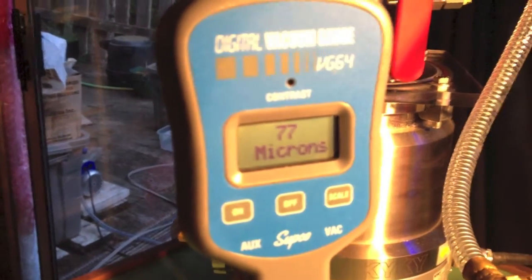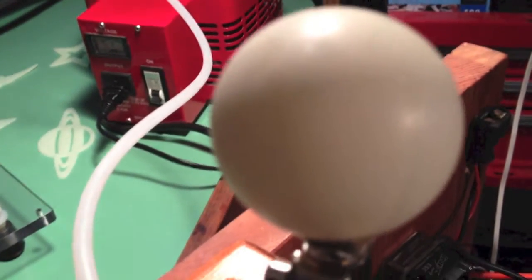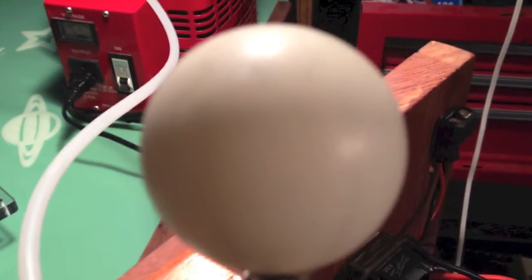And it's pulling down the vacuum gradually here. We're down to 77 microns now. We're just going to see what happens with the ping pong ball. Will it implode? Stay tuned for the next episode.